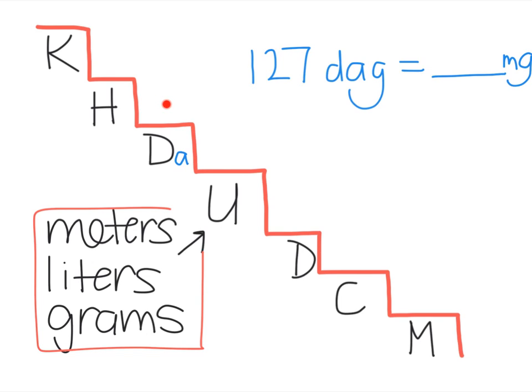Did you start here on the decagram stair? And now we have to go all the way down to milligram, so we're going to move this way. And how many spaces are we moving? If I start on deca, and I move 1, 2, 3, 4 stairs down, and I'm going to land on here, which direction did I move? Well, I move to the right, which means I'm going to move my decimal 4 places to the right.